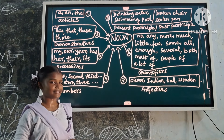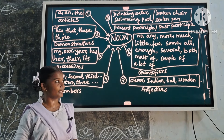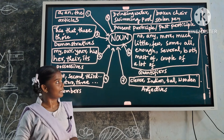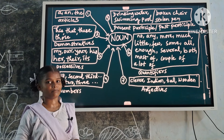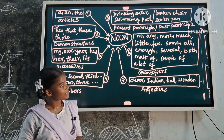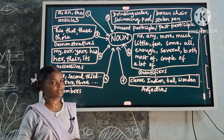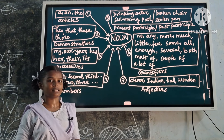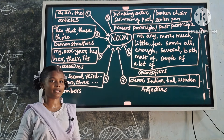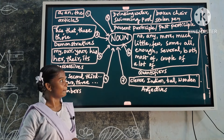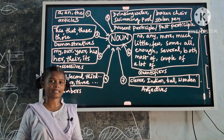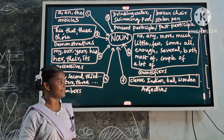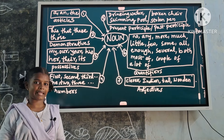Examples of quantifiers: no boys, any boy, much water, more boys, little water, few boys, some water, all boys, enough water, several boys, both boys, most of boys, a couple of boys, a lot of boys.